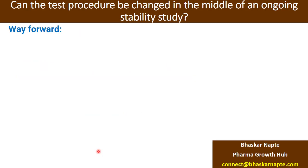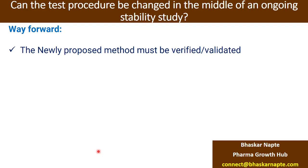Now, having understood that there is a possibility to bring a change in the test procedure, the second important point is the way forward. You can bring a change in the test procedure or adopt a completely new test procedure, provided you either verify or validate the test procedure. In case of a minor change, you can think about verification — maybe by just conducting specificity, precision, or accuracy. But in case of a major change or a complete revamp, you should conduct a complete validation.